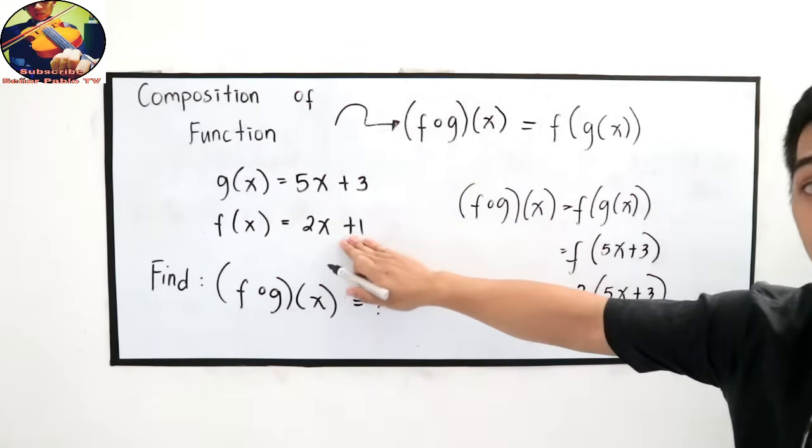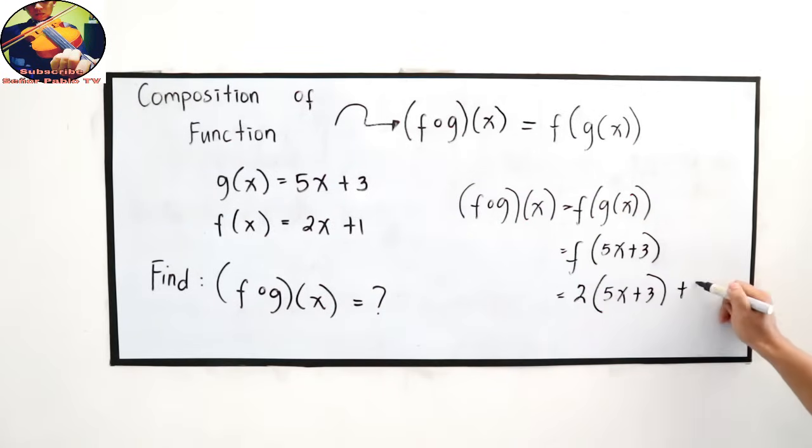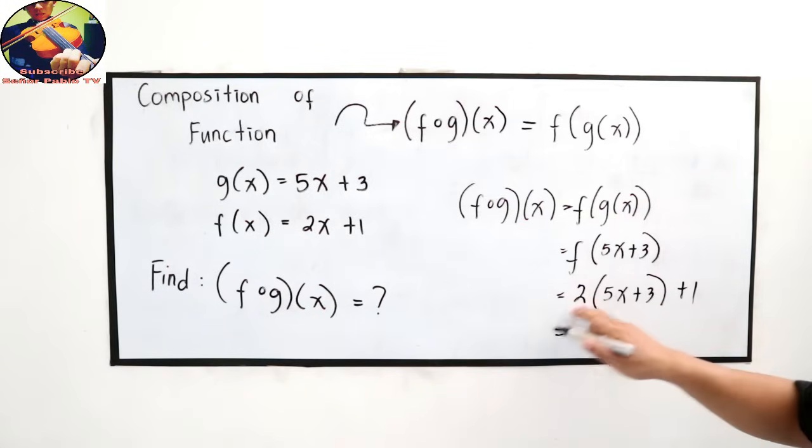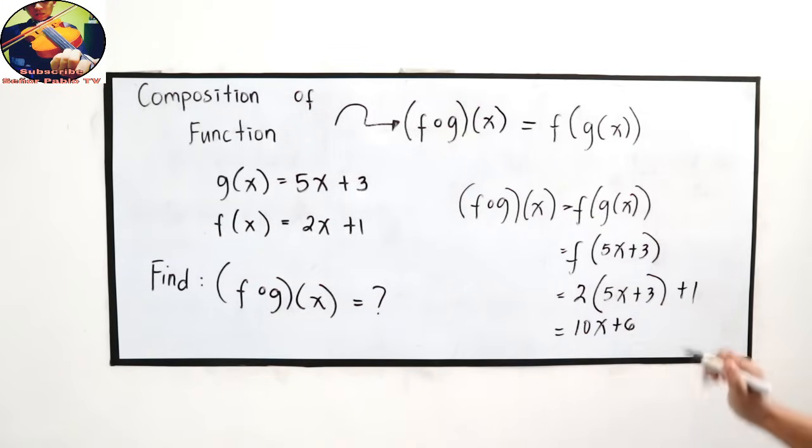Then don't forget, we have plus 1, so add the plus 1. Now let's simplify. 2 times 5x, that is 10x. 2 times 3, positive 6. Then copy, plus 1.